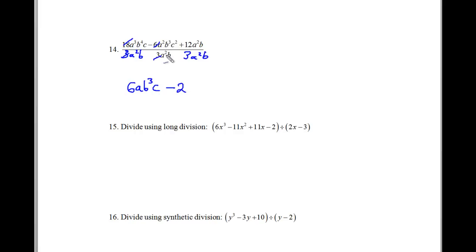a squared divided by a squared is 1. b cubed divided by b is just b squared. And there's no c squared, so we'll just put the c squared there. In our final problem, we have 12 divided by 3, which is 4. a squared divided by a squared is 1, and b divided by b is 1. So 4 times 1 times 1 is just 4. And that's our answer to problem 14.